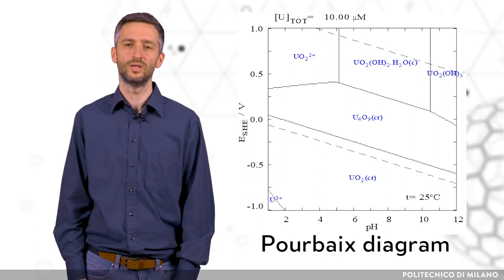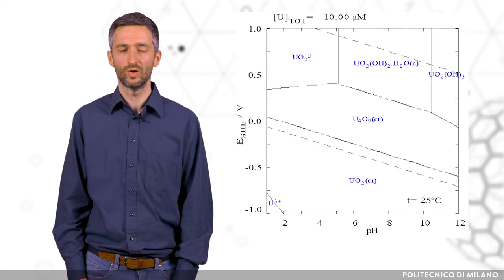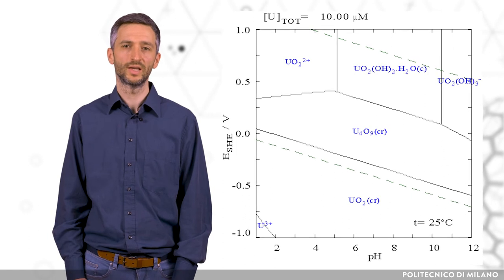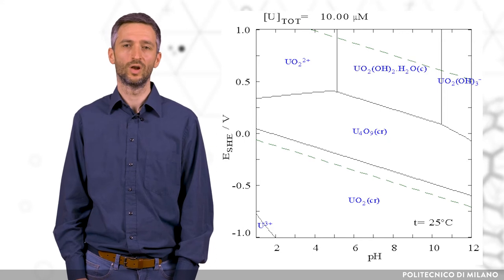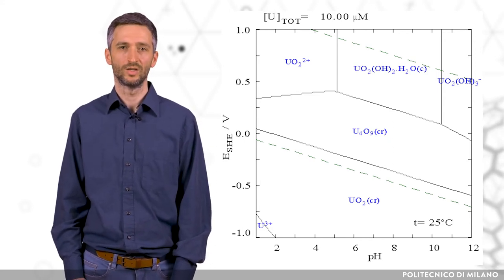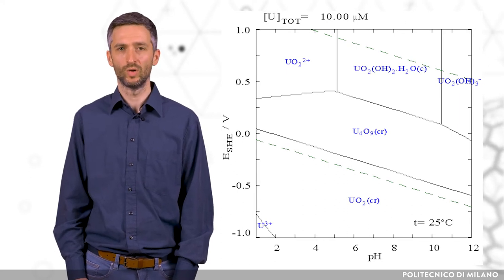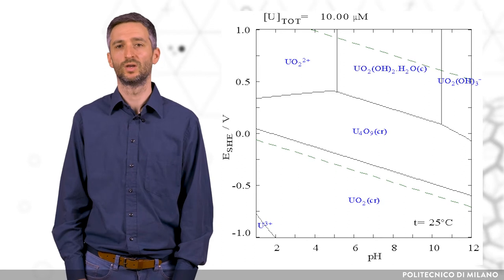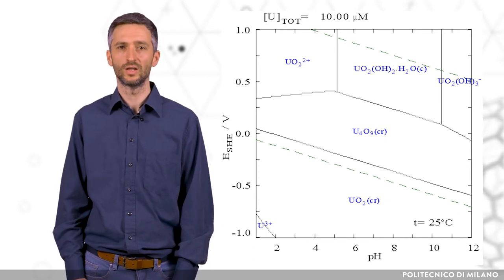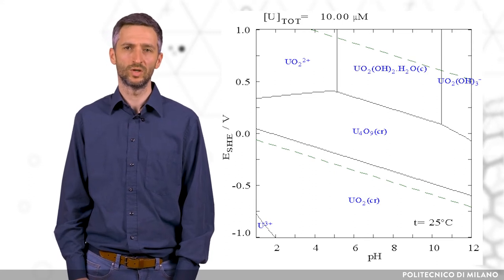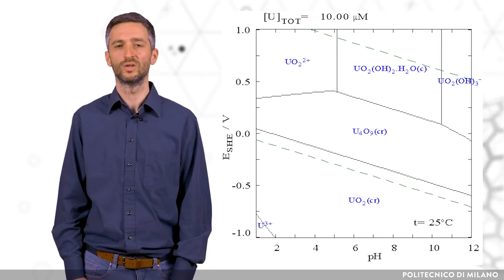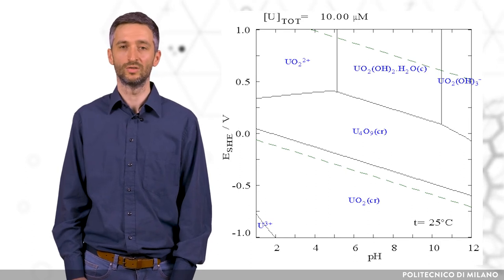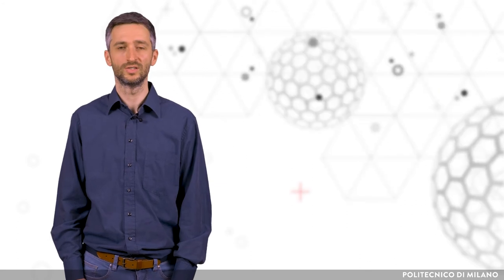Pourbaix diagrams are also known as EH-pH diagrams. Consider the uranium Pourbaix diagram: the vertical axis is labeled EH for the voltage potential with respect to the standard hydrogen electrode, while the horizontal axis is labeled pH for the log function of the H+ ion activity. The solid lines show equilibrium conditions where the activities of species from both sides are equal, and on either side of the line one form of the species is predominant. Dashed lines show the stability limits of water, where below or above them water is not stable and will be reduced to hydrogen under highly reducing conditions and oxygen under highly oxidizing conditions.